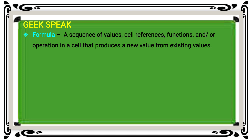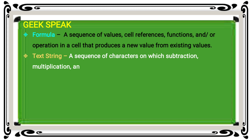If you create a formula, you start by making the equal sign — equal signs are used in the formula. The second topic is text string: a sequence of characters on which subtraction, multiplication, and division cannot be performed.